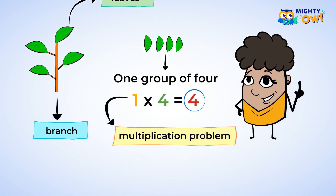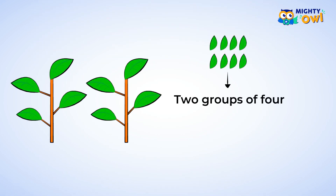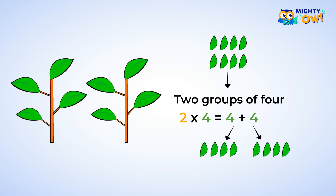Let's say you added another group of leaves, so now you have two groups of four leaves. You can write this as two times four. You can also think of this as four plus four. Even when writing it using addition, you can see that there are two fours, one for each group of four leaves.